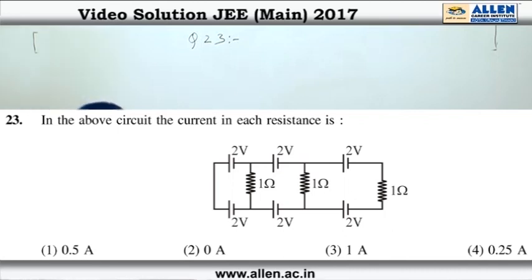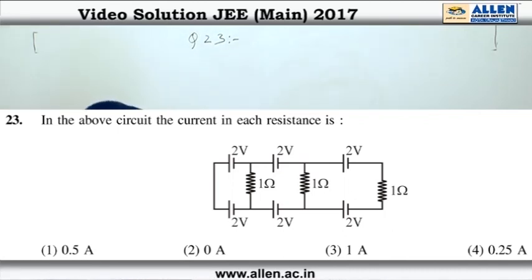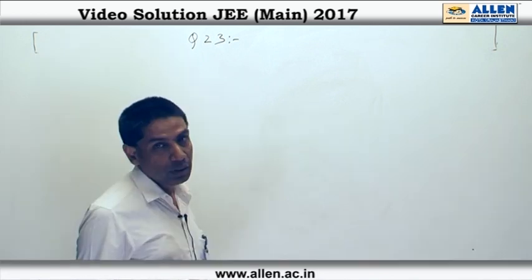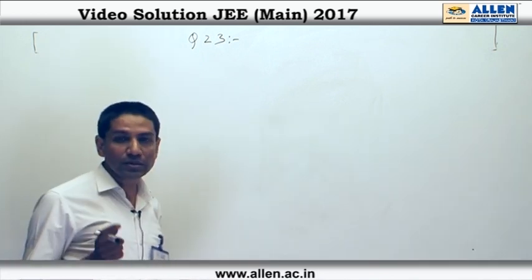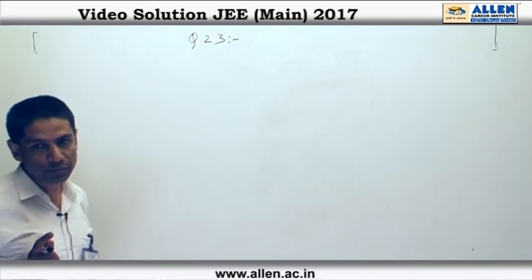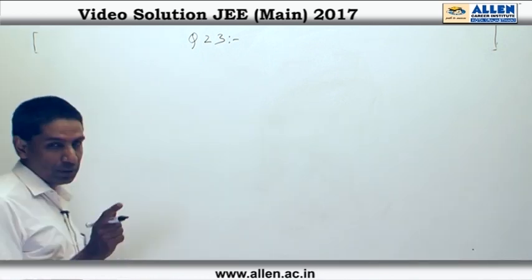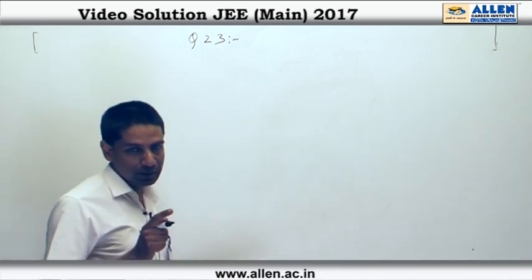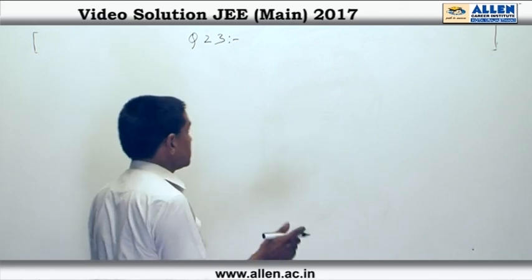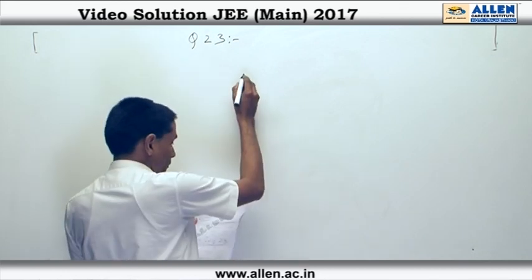Question 23: they have asked the current in each resistance. Incidentally, in this question the current in each resistance happens to be the same — normally it may not be the case, but in this case it is. Let us see how.